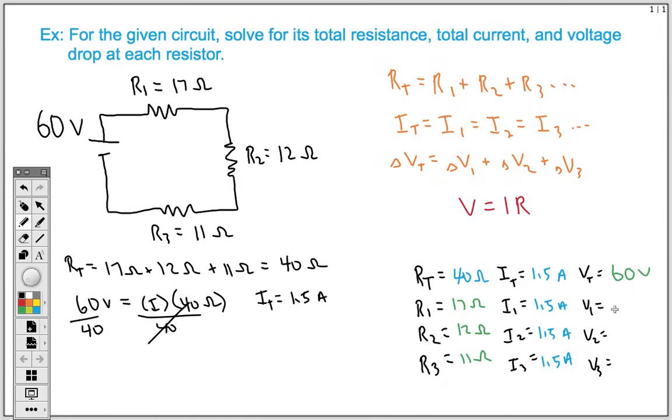To find this first voltage drop, we're going to be using our 17 Ohms and our 1.5 Amps. We're just going to multiply these two because it's going to be our current times resistance. So V1 is going to equal our 1.5 Amps times our 17 Ohms. And that's going to give us a total voltage of 25.5 Volts.